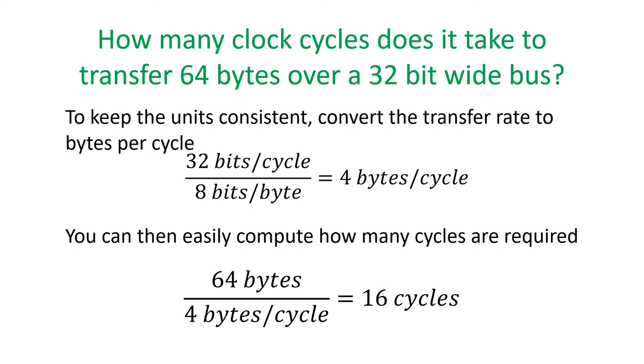We have a 32-bit wide bus. Dividing by 8 bits per byte shows we can transfer 4 bytes per cycle. We want to transfer 64 bytes, so divide 64 by 4 bytes per cycle and we get 16 cycles. It takes 16 cycles to transfer 64 bytes over a 32-bit wide bus.